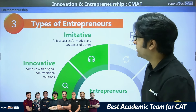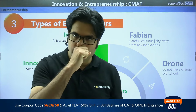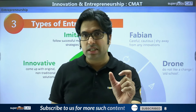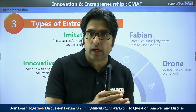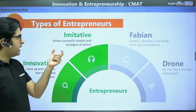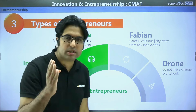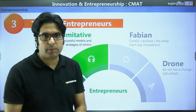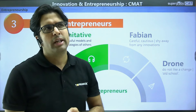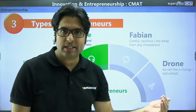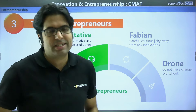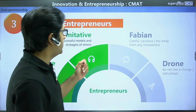The next category is imitative entrepreneurs. Imitative is derived from the word 'imitation,' meaning to copy. In a negative sense, these entrepreneurs are sometimes called copycats. If one type of business is successful, imitative entrepreneurs will replicate that business by improving some part of the core competence. They follow successful models and strategies of others — if something has worked for one person, they'll copy it and start doing the same. There is no inherent negativity in following and improving, but they are sometimes called copycats.